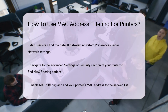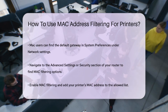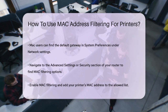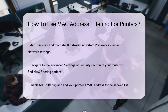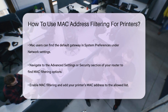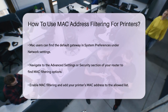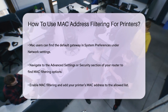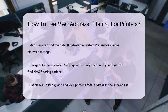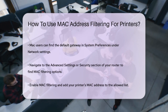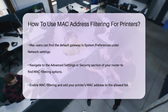Here's an example of how this works. If your router has MAC filtering enabled and you've added your printer's MAC address to the allowed list, only your printer and other devices on that list will be able to connect to the network. If you've mistakenly added a device to the blocked list, it won't be able to connect.